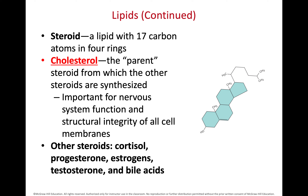We also have steroids. The basic steroid molecule — like cholesterol — has three six-carbon rings and one five-carbon ring all linked together. We use steroids generally as signaling molecules, such as estrogens, progesterone, and testosterone. We also use steroids to make the cell membrane more rigid. As we increase cholesterol in the cell membrane, the membrane becomes more viscous and rigid; removing cholesterol makes it less rigid.